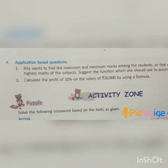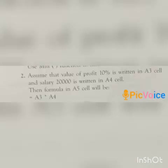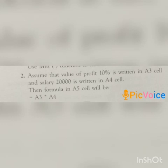Question 2: Calculate the profit of 10% on a salary of 20,000 using a formula. Answer: Assume the profit value 10% is written in cell A3 and salary 20,000 is written in cell A4. Then the formula in cell A5 will be =A3*A4.